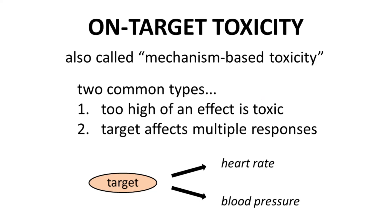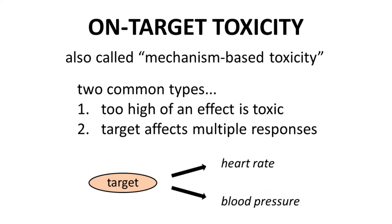The illustration at the bottom of the slide highlights both of these possibilities. Here is a generic target, likely an enzyme or receptor. Let's say that our goal is to modulate this target with a drug to reduce blood pressure. If a patient has high blood pressure, then reducing blood pressure is good, but you don't want to reduce blood pressure too much because that could be dangerous. This is like type 1 — we want a response, but not too great of a response.